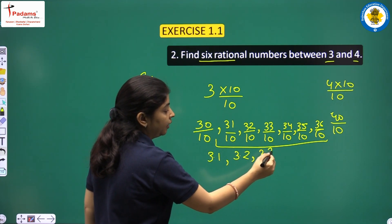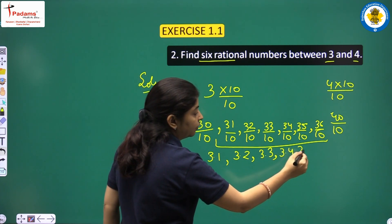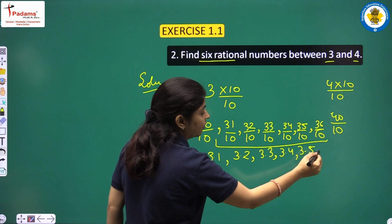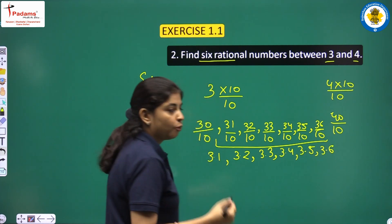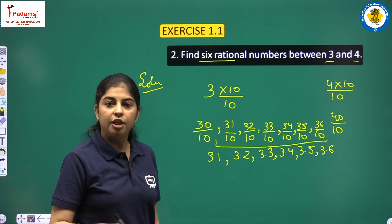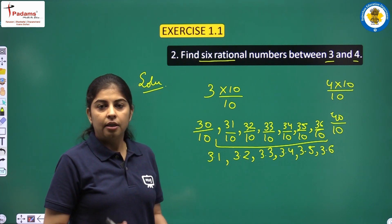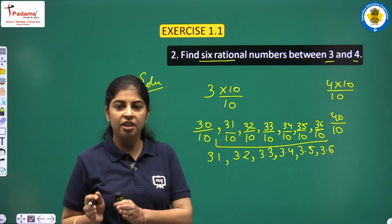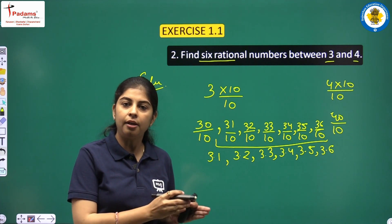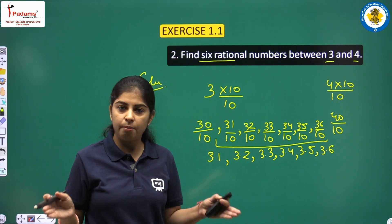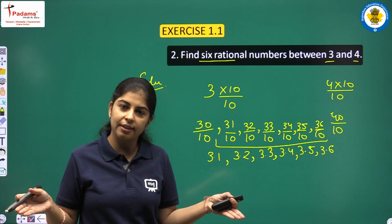Between any two rational numbers there are infinite rational numbers. So between 1 and 2 we can find infinitely many rational numbers.